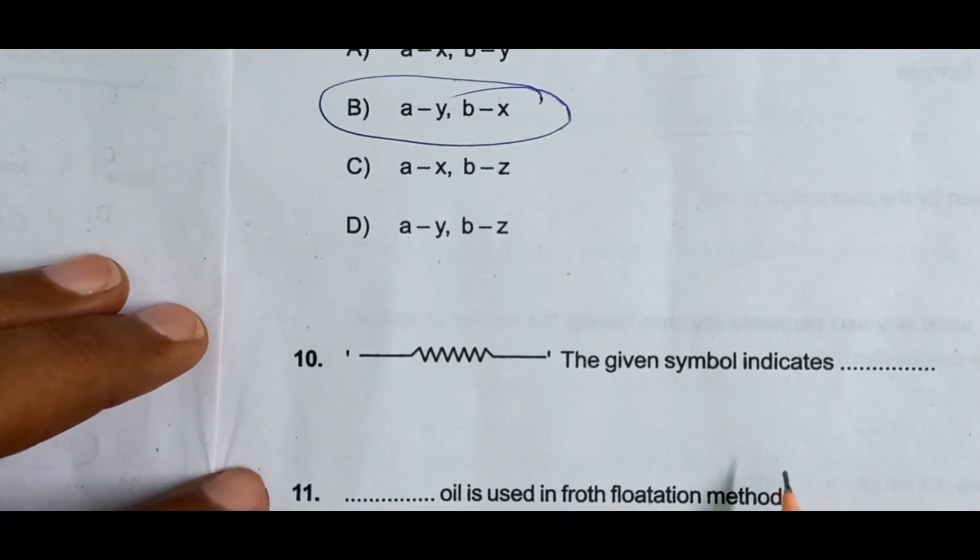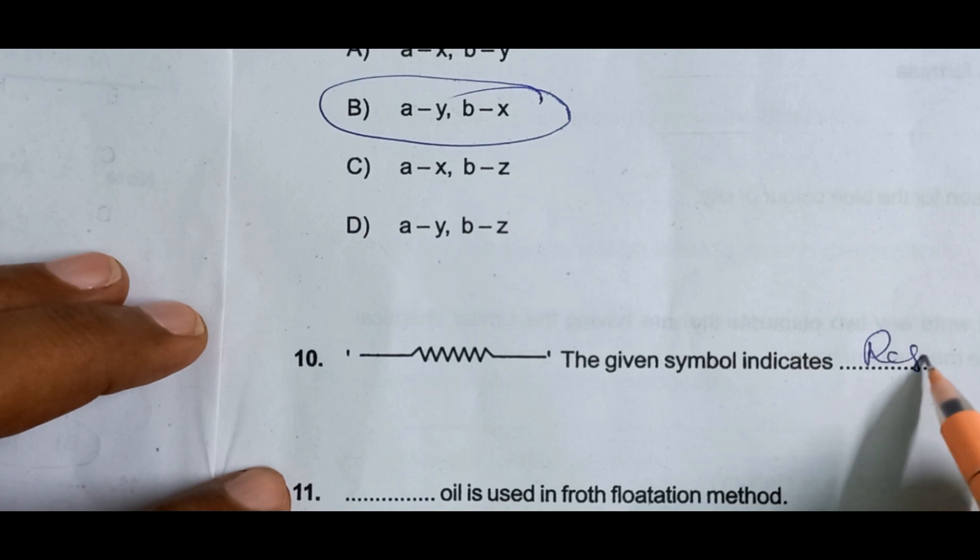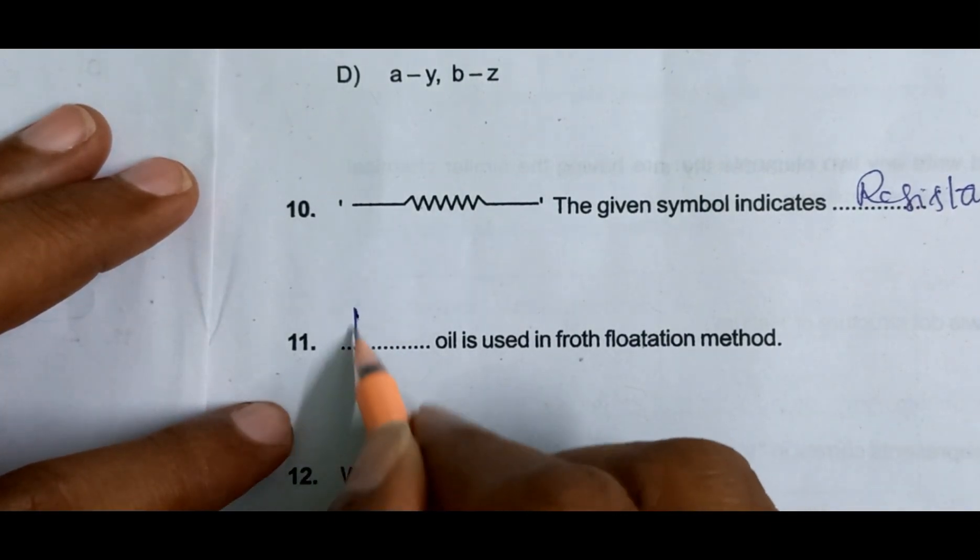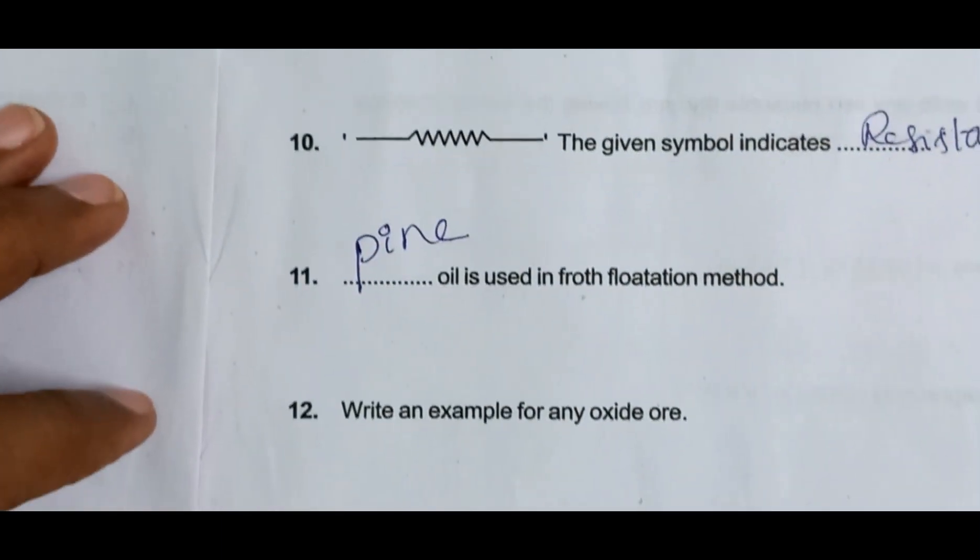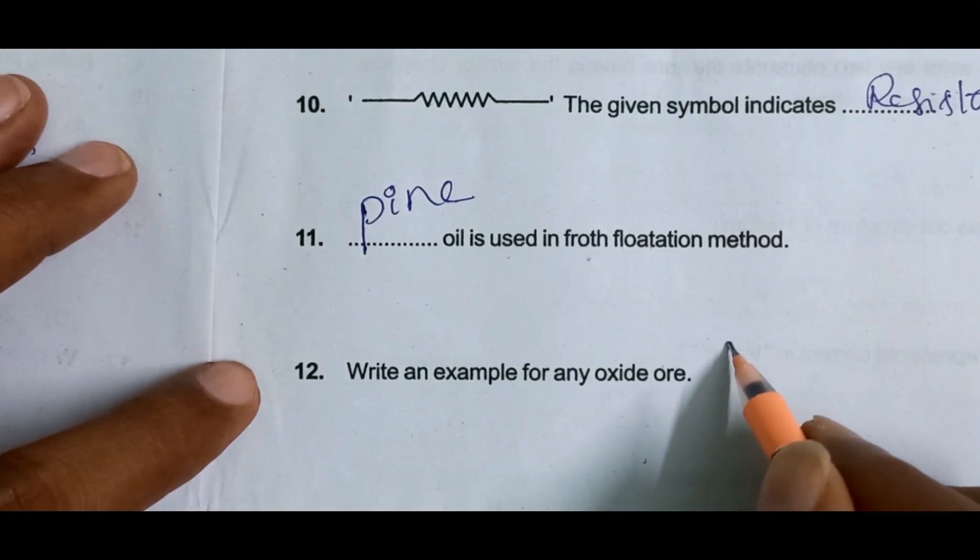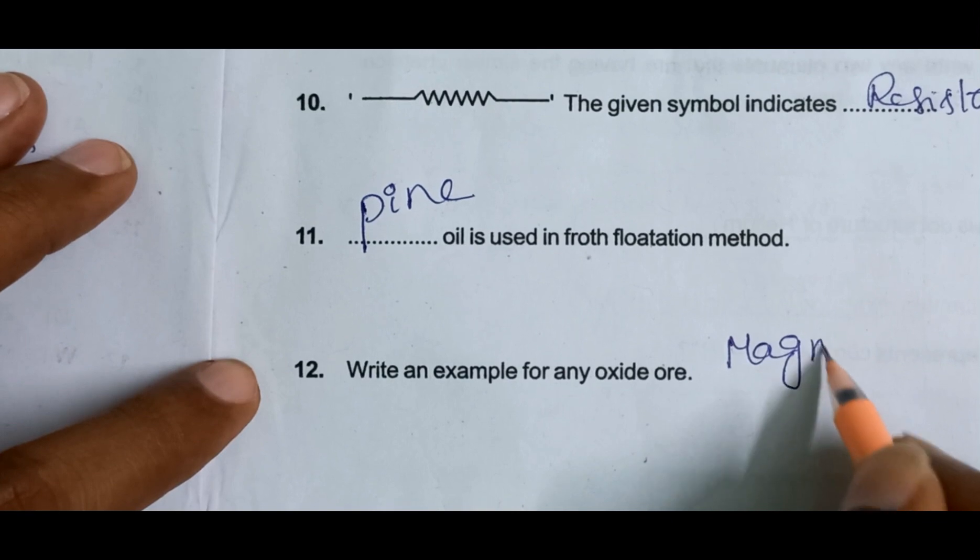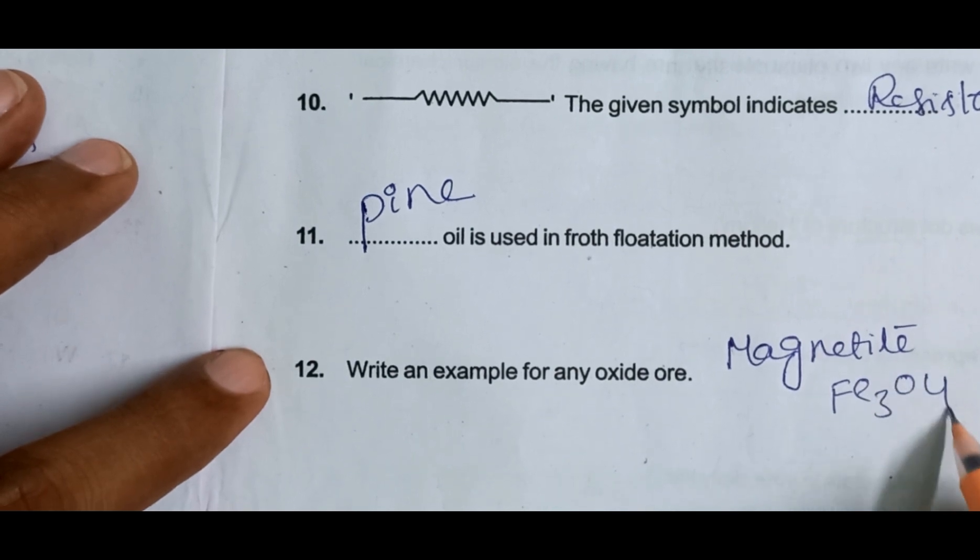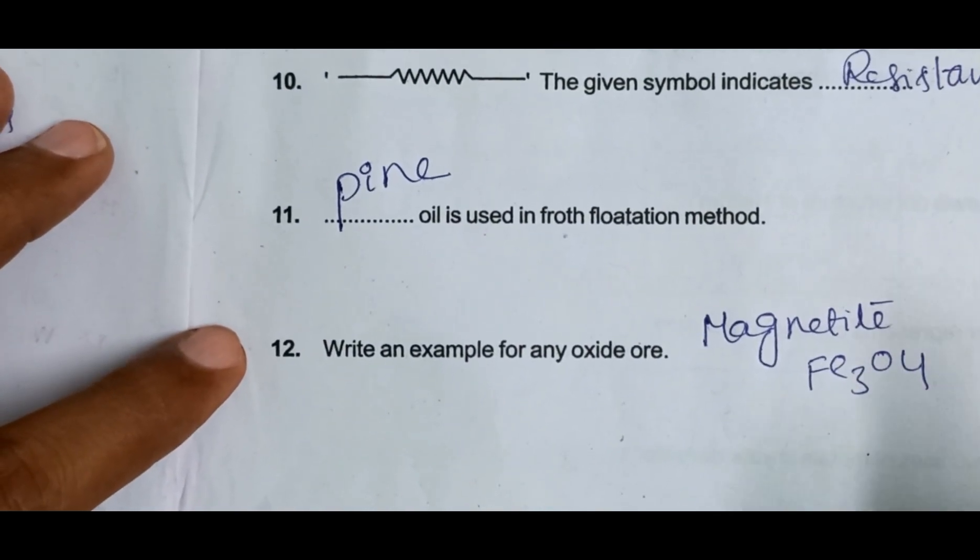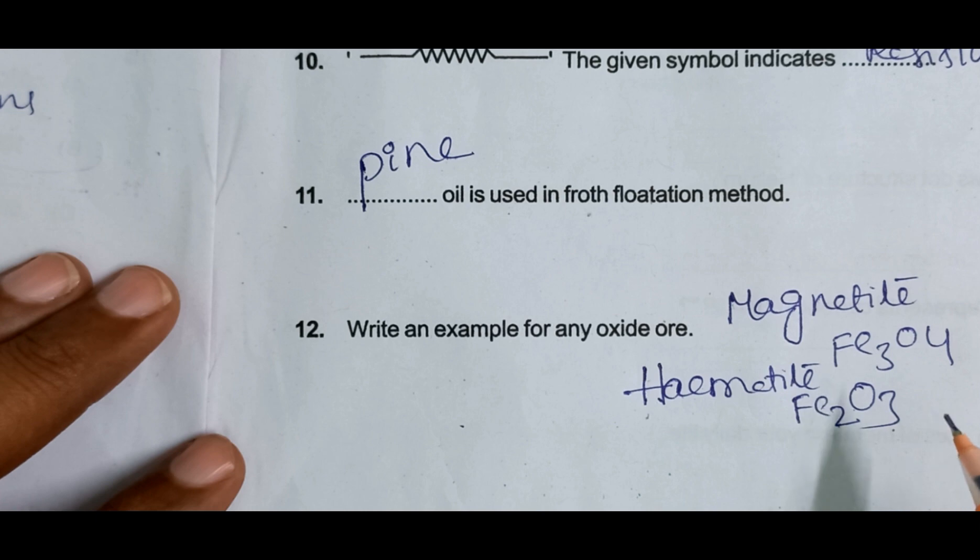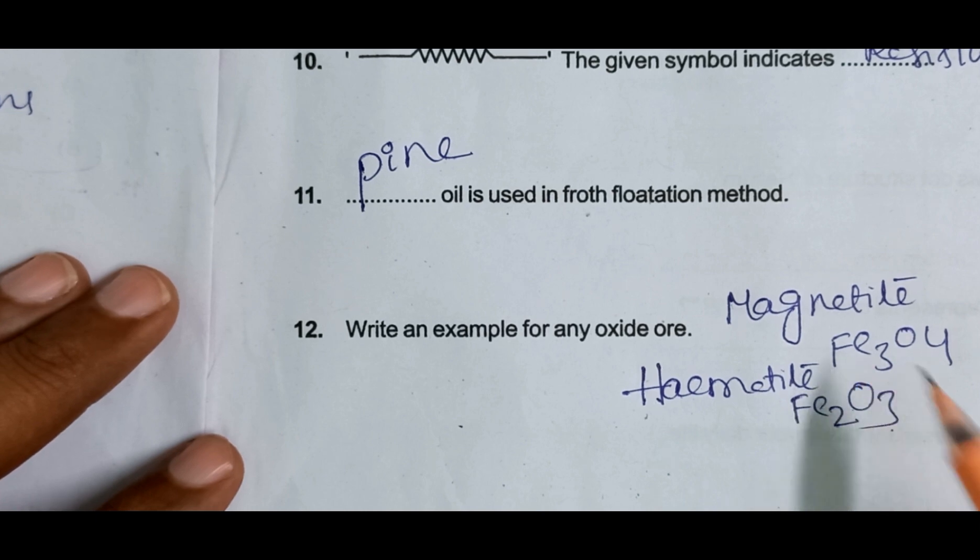Next, the given symbol is resistance, a symbol for electric resistance. Pine oil is used in the flotation method. Write an example for oxide ore: magnetite. Formula is Fe3O4, or hematite also you can write. The formula is used, so this question, only formula one mark is used.